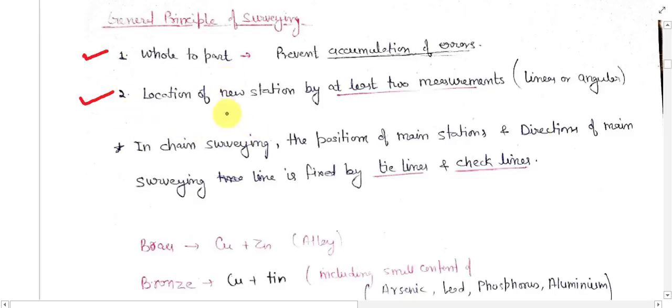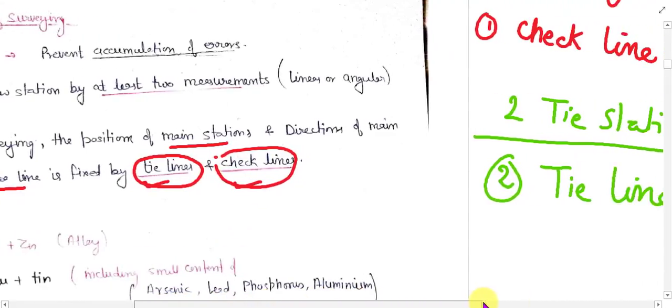These two measurements may be linear or angular based on the type of instrument. The third point says that in chain surveying the position of main station and direction of main surveying line is fixed by tie lines and check lines. Now what are the tie lines and check lines? We will discuss these two terms in our figure.